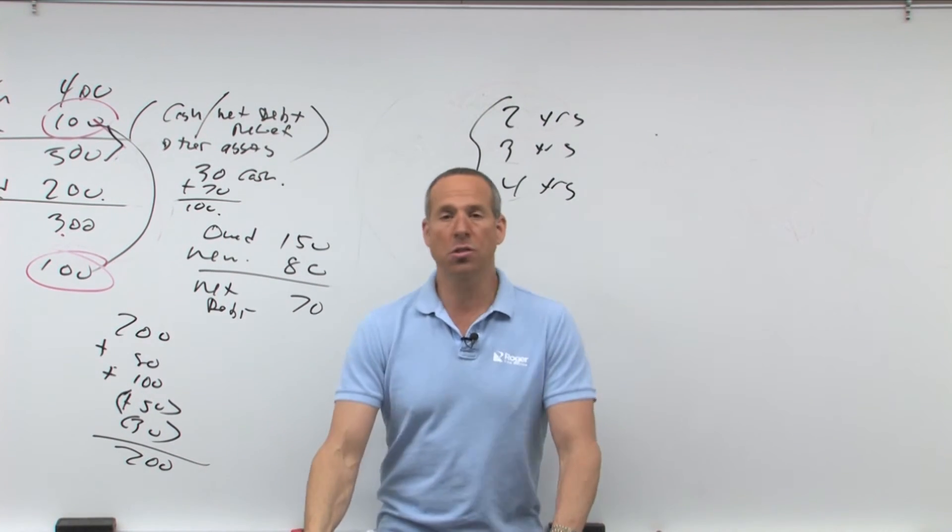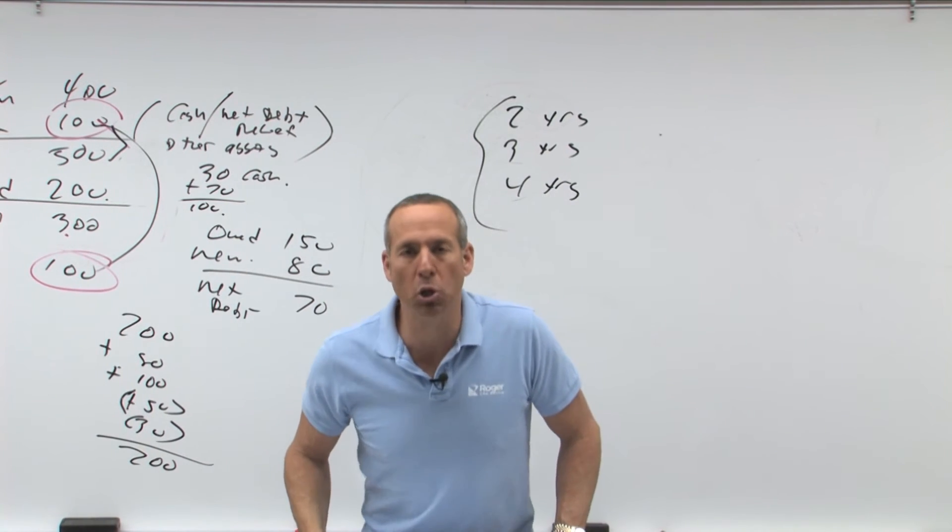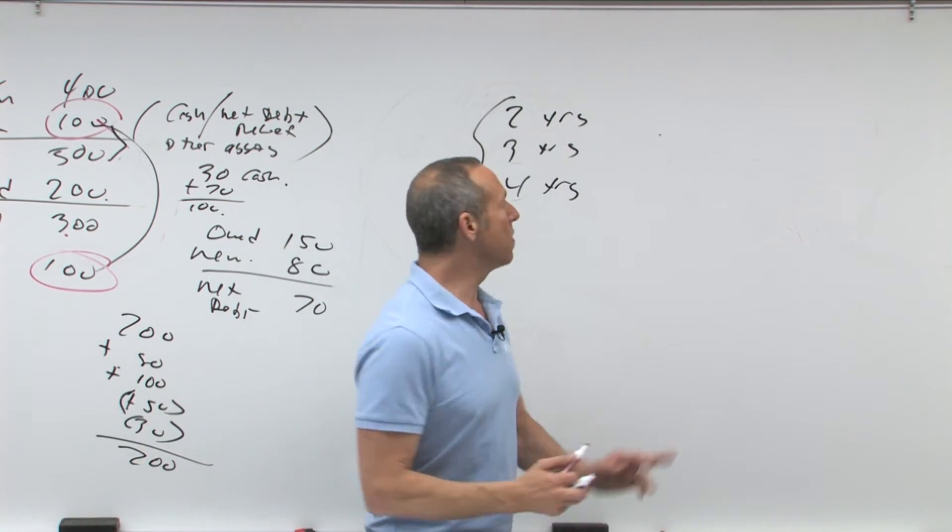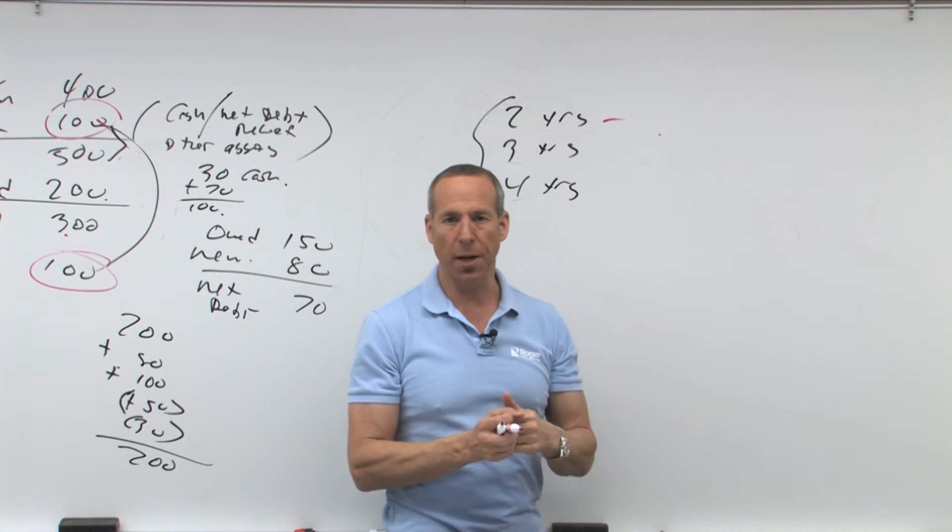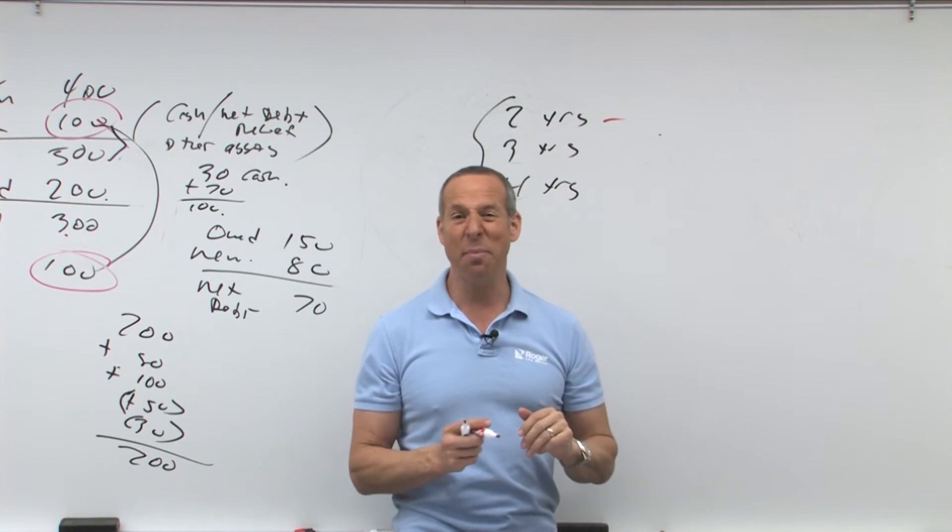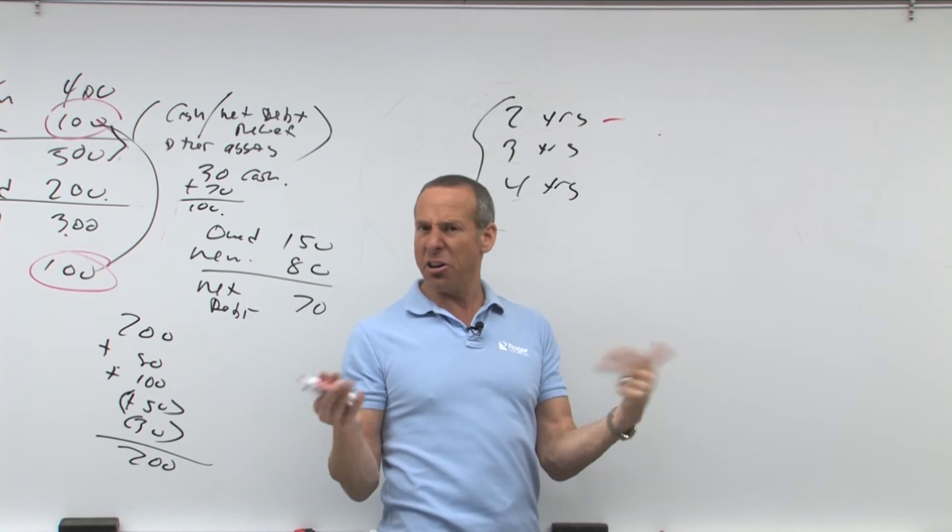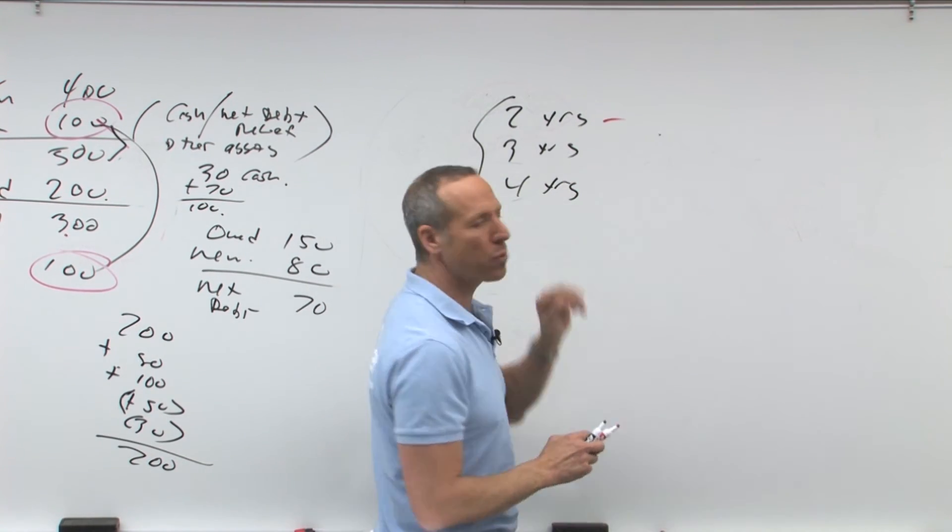If for example, it was destroyed, it was just burnt, you know, blew up or theft or something like that, then I have two years to reinvest the money, otherwise I have a taxable gain. If instead, it's eminent domain, the government decides your house makes a good freeway off-ramp, I have three years from then.